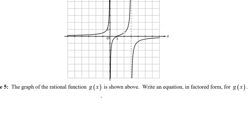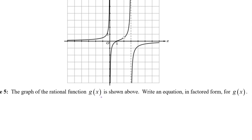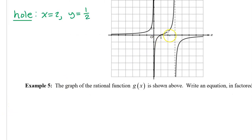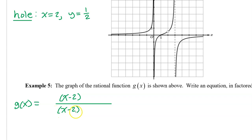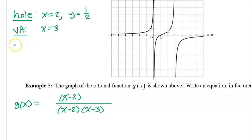Example 5. The graph of the rational function g of x is shown above. Write an equation in factored form for g of x. We see a hole at x equals 2 and approximately y equals one half — that tells us we need a factor of x minus 2 in the denominator that cancels out with a factor in the numerator. We see a vertical asymptote at x equals 3, so we need a factor of x minus 3 in the denominator that does not cancel out. We also see a zero at x equals 1, so we need a factor of x minus 1 in the numerator that does not cancel out.